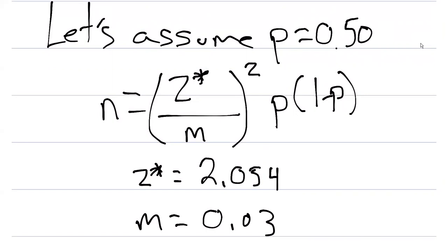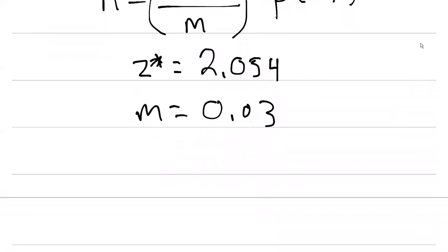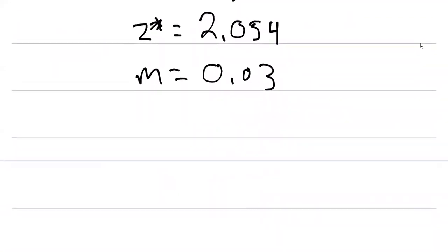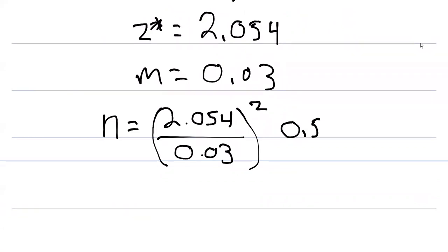We have the values from this question. Now we can enter them into the formula. N then is going to equal 2.054 divided by 0.03, and then we'll square that. Our probability P is going to be 0.5 and its complement is 1 minus 0.5. We can calculate this out.